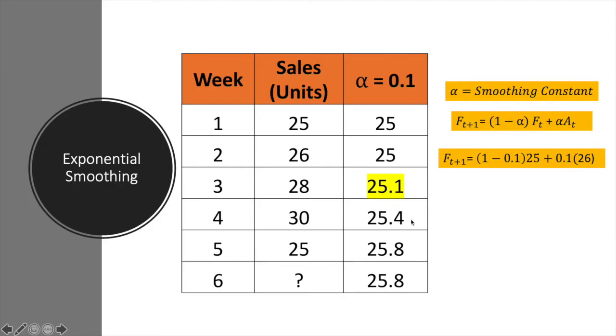So these are the two values that we are using to predict or forecast the value in week 3. This process is going to continue until we get this value here, 25.8. Based on the values here, we can actually forecast that for week 6, the sales is going to be 25.8.